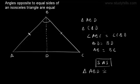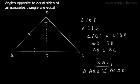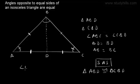Since triangle ABD is congruent to triangle CBD, all the sides and all the angles of these two triangles will be the same. Therefore, side AD is equal to side DC, and angle A is equal to angle C. This way we have proved that angle A is equal to angle C — that is, angles opposite to equal sides of an isosceles triangle are equal.